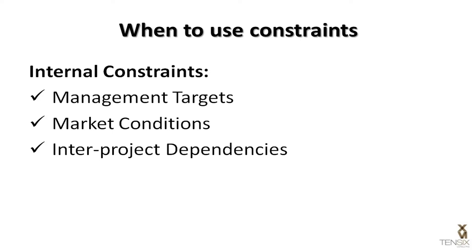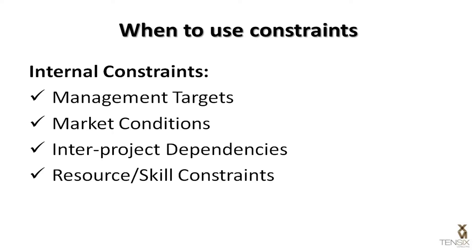Inter-project dependencies can be a factor when the deliverables from one project affect the start of work in another. Resource skill constraints refer to the availability of specialised personnel to perform certain activities within the schedule.